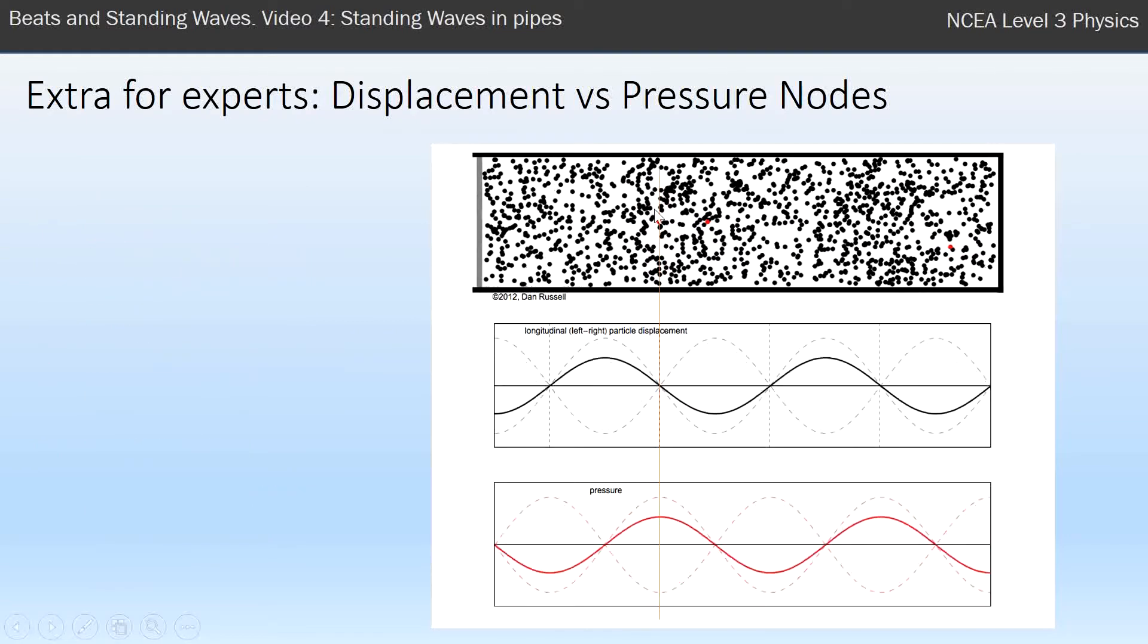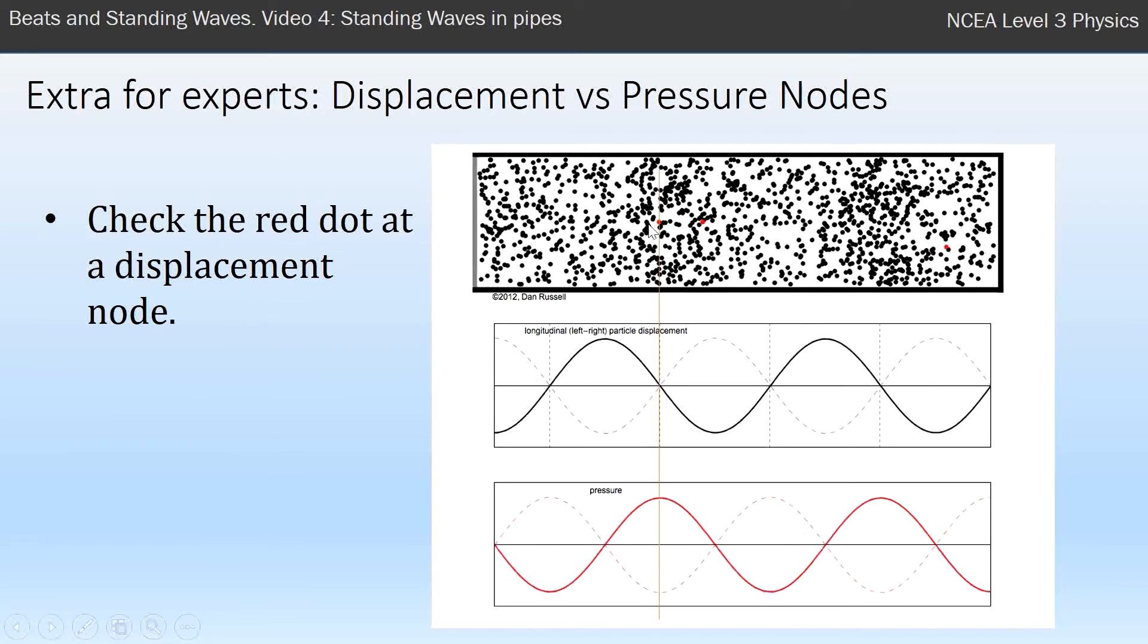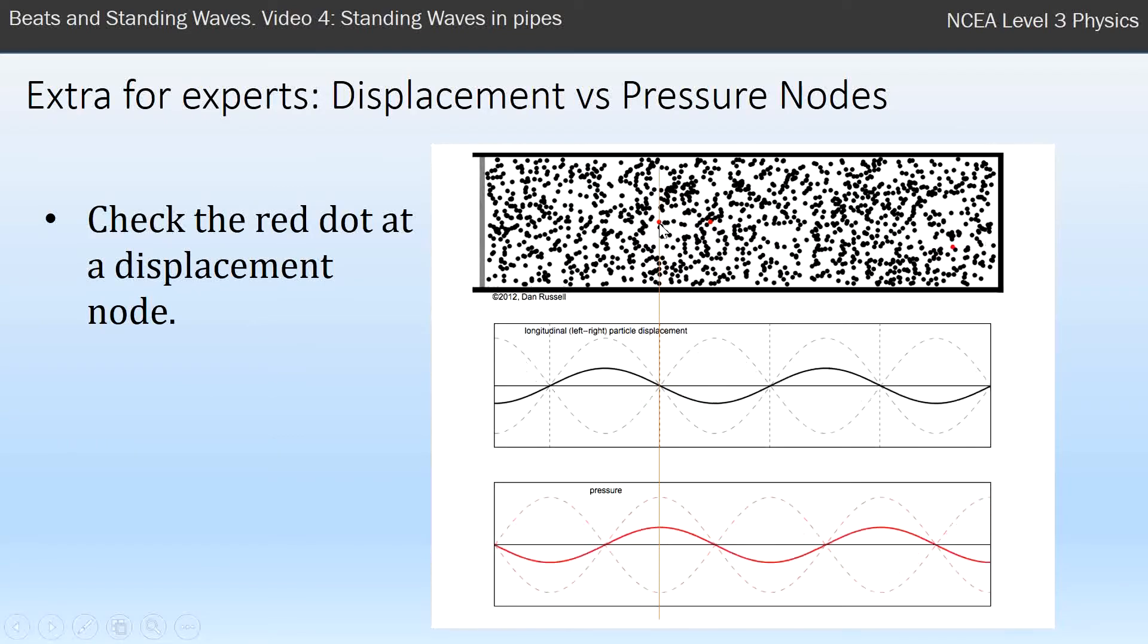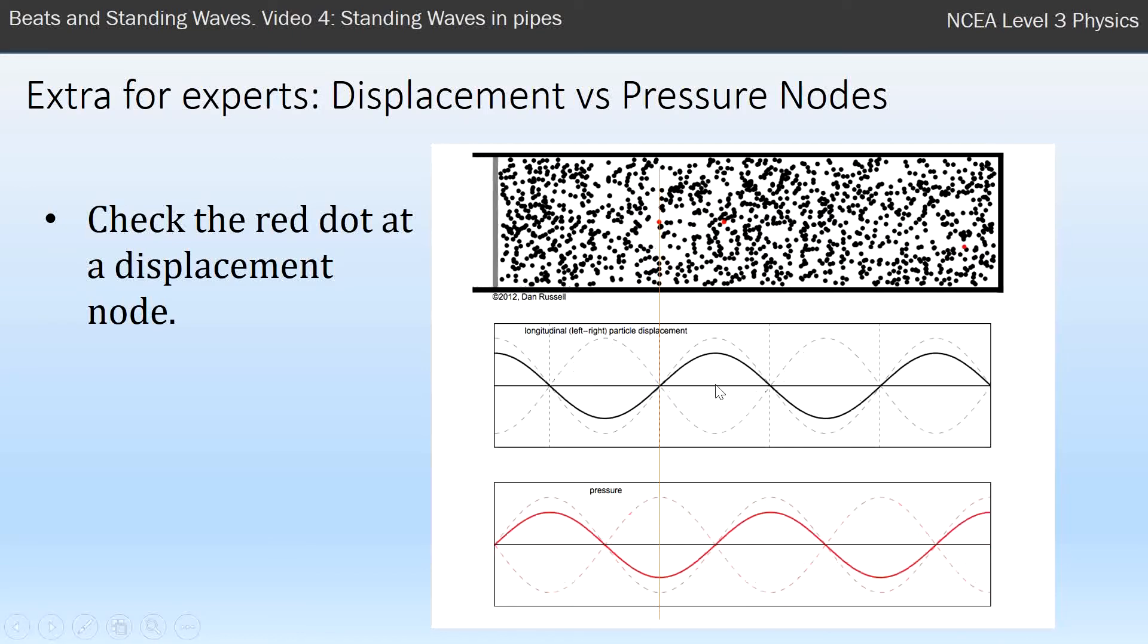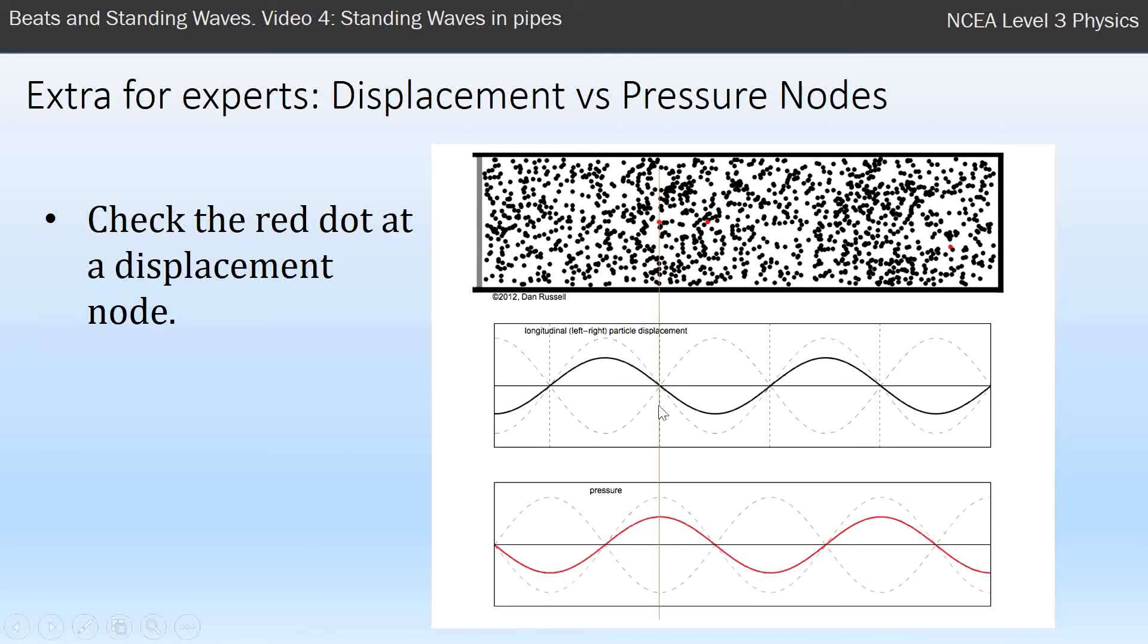Let's look at one of these particles, this red one in the middle here, and you see that it's a displacement node. It's not moving at all, right? And that lines up very nicely with this sine wave standing wave, and it's the node of the displacement wave.